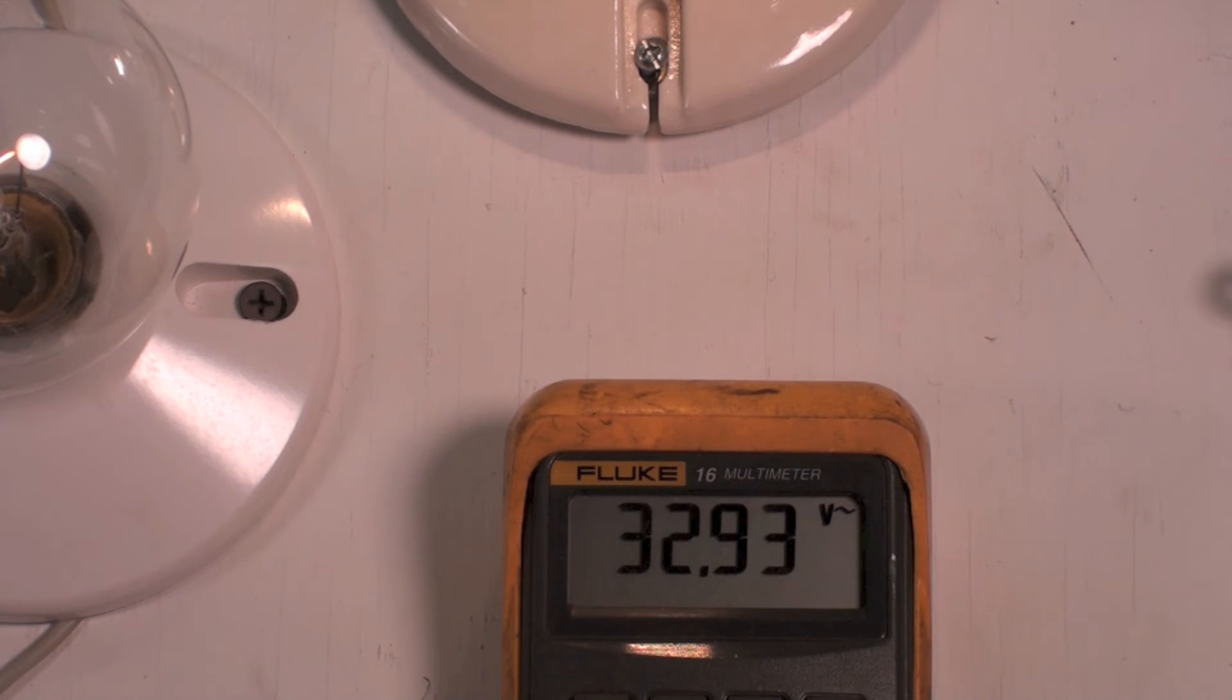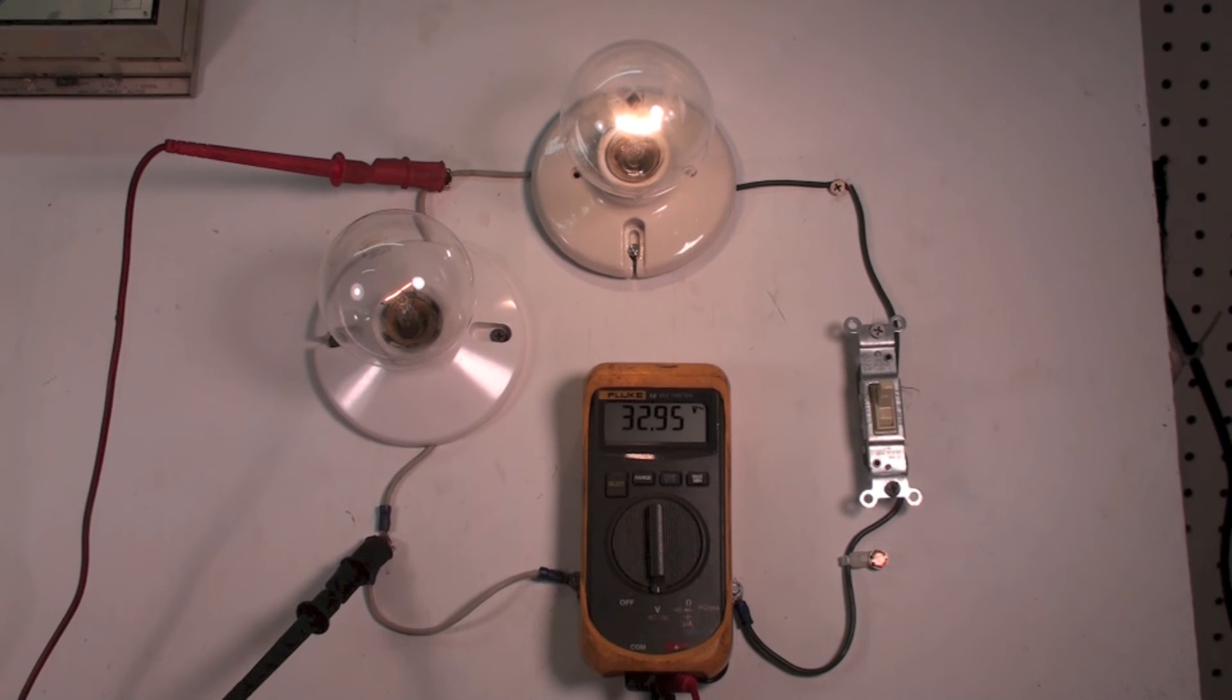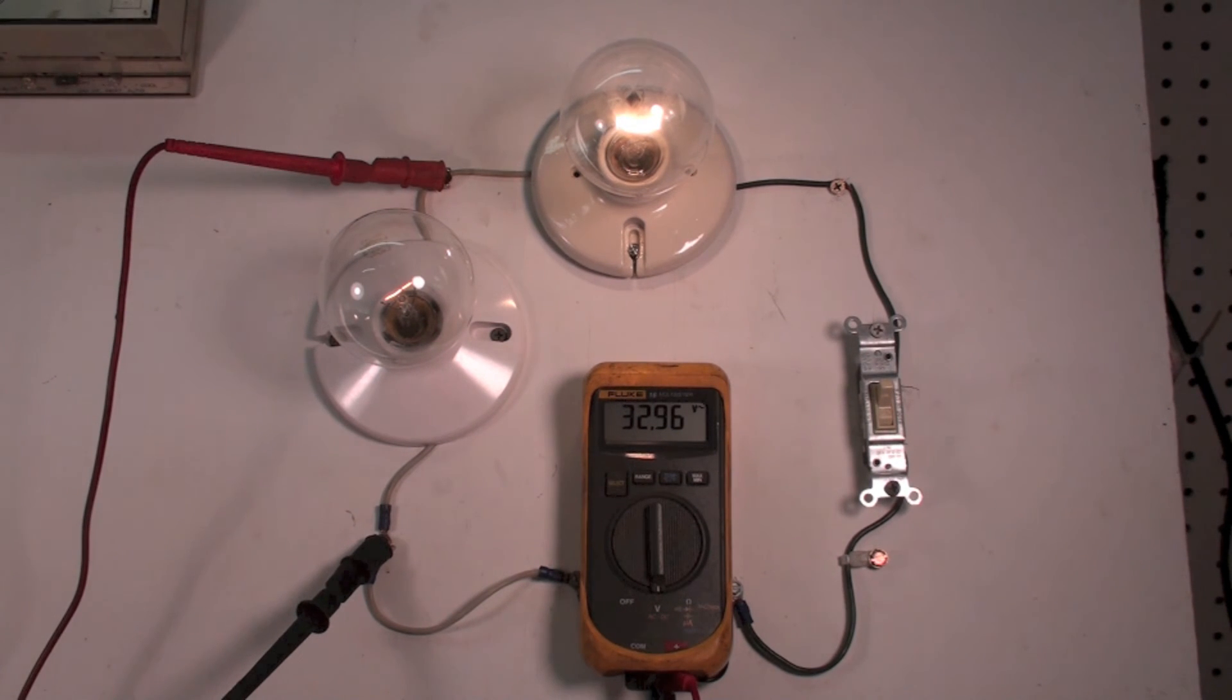So all the math seems to work out. Now you can see why we don't put lights in series or any loads in series generally on AC circuits.